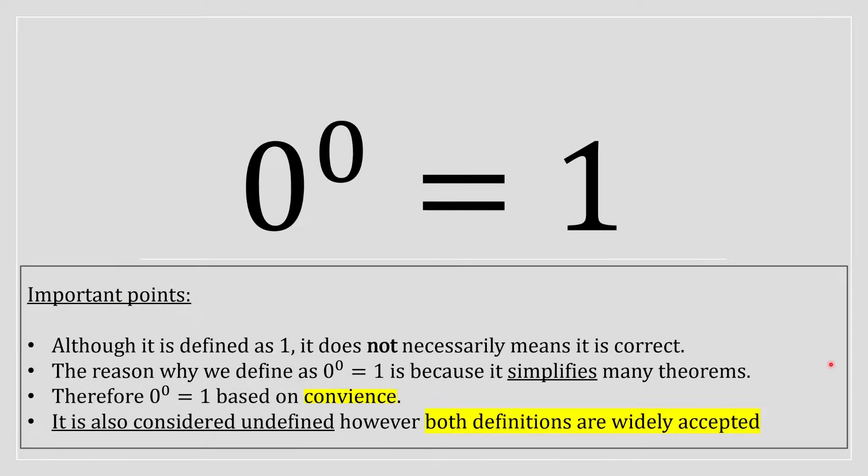So this is why 0 to the power of 0 is equal to 1. There's some important points I like to address. Although it's defined as 1, it does not necessarily mean that it's correct. The reason why we define 0 to the power of 0 is equal to 1 is because it simplifies many different theorems out there.